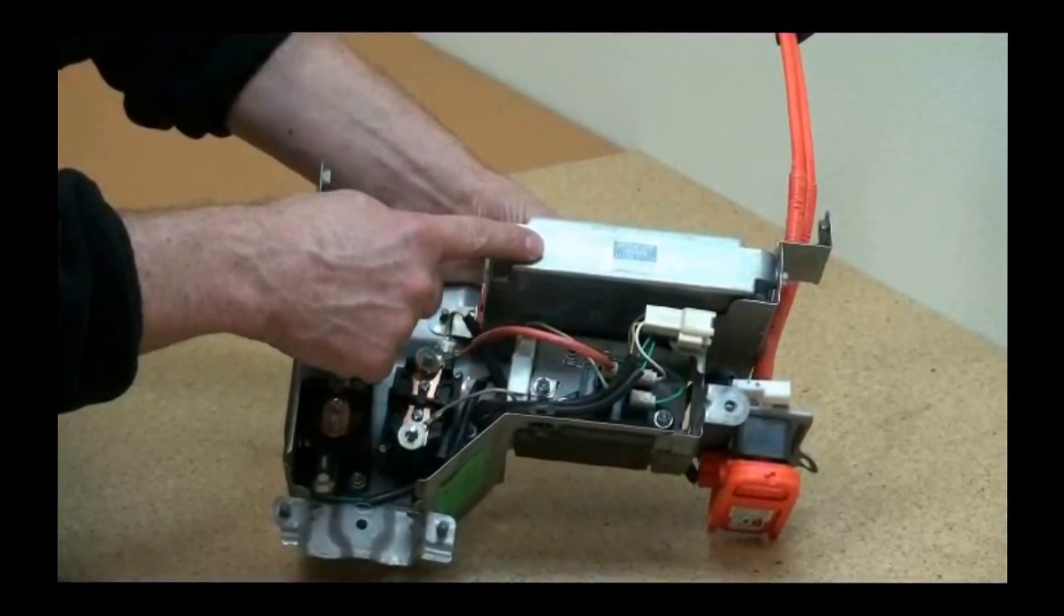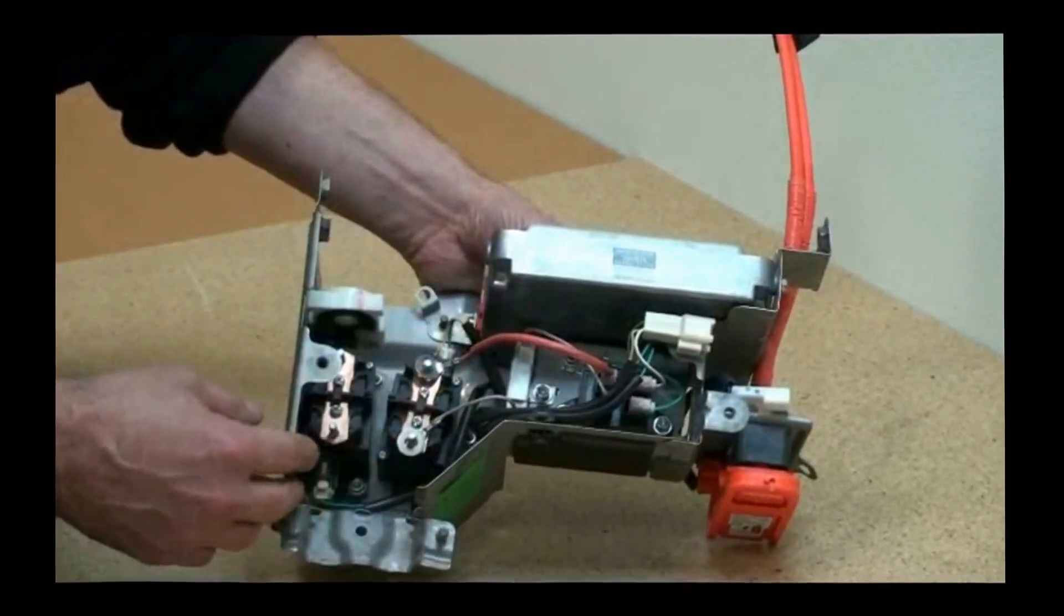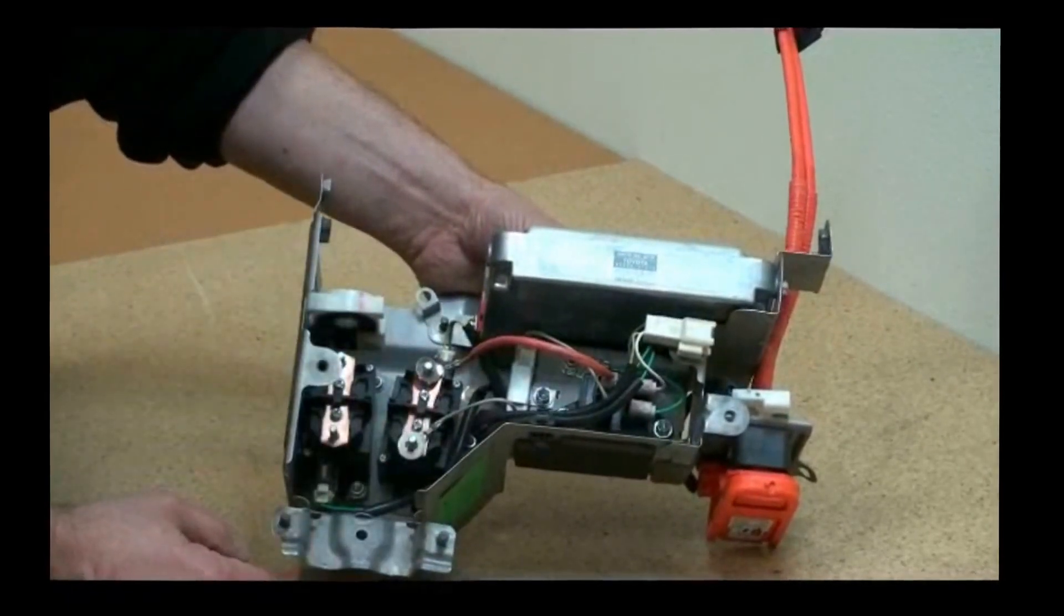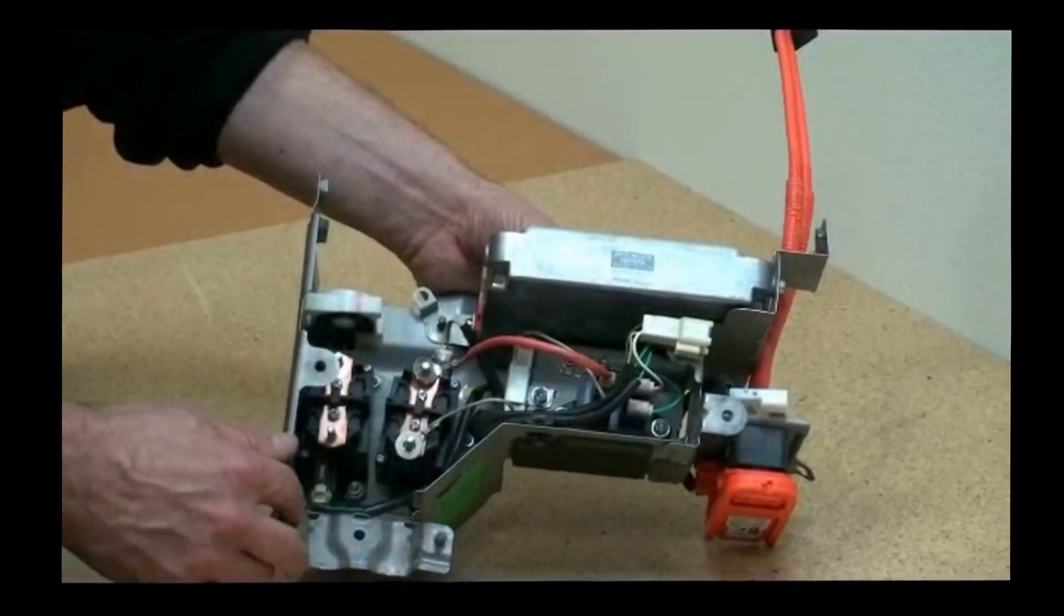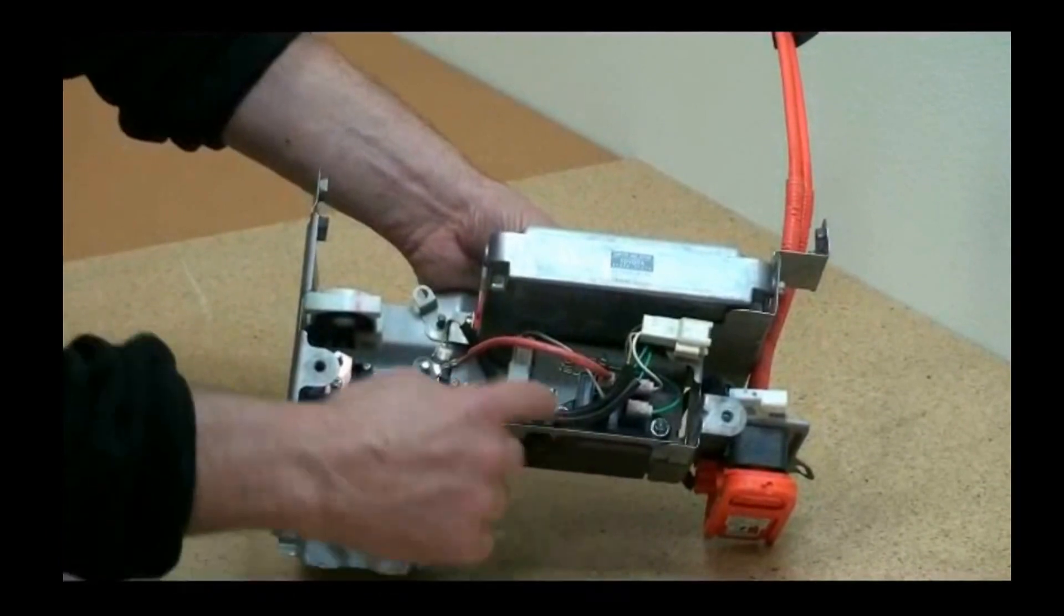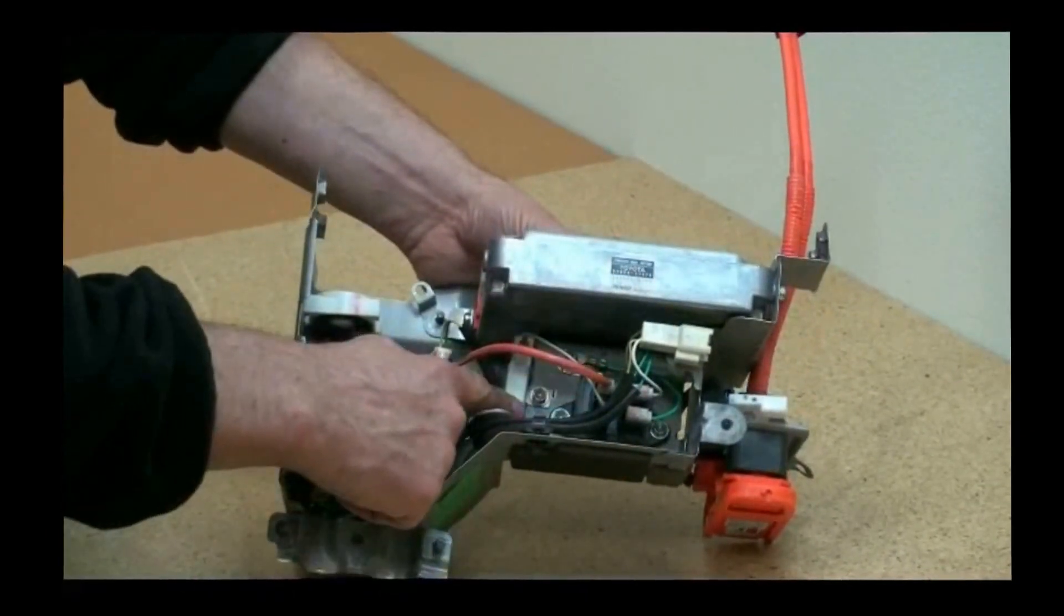The first component we have is the battery controller. It monitors all the inputs from the battery pack system and makes decisions and sends that to the hybrid controller. We also have the pre-charge relay and the pre-charge resistor.